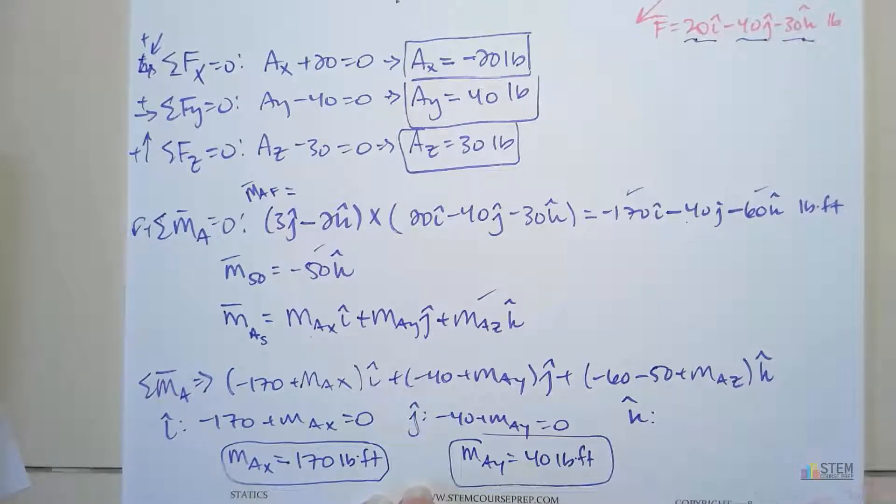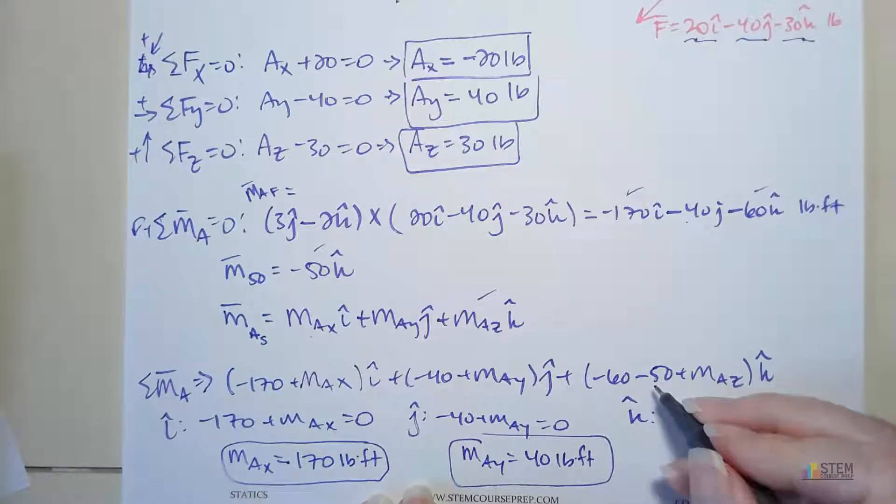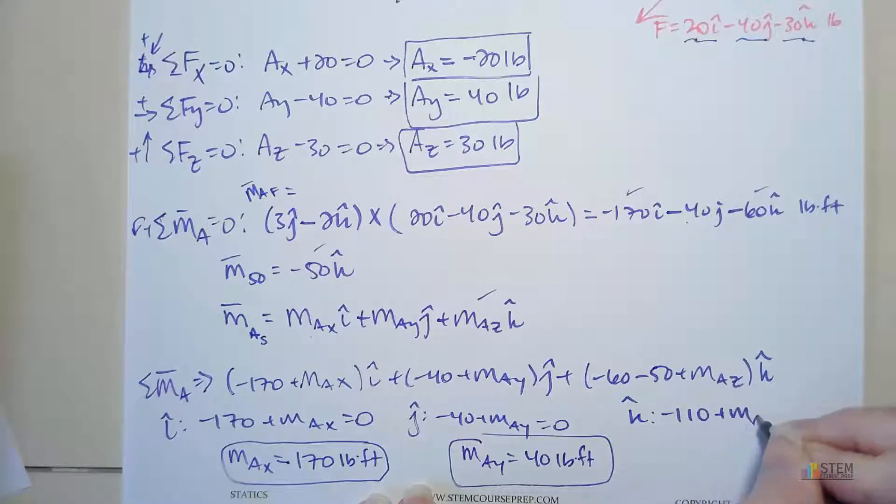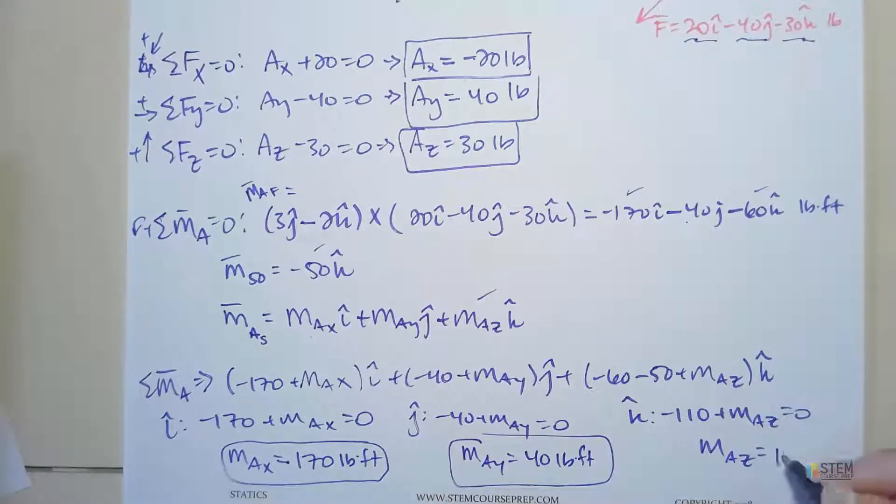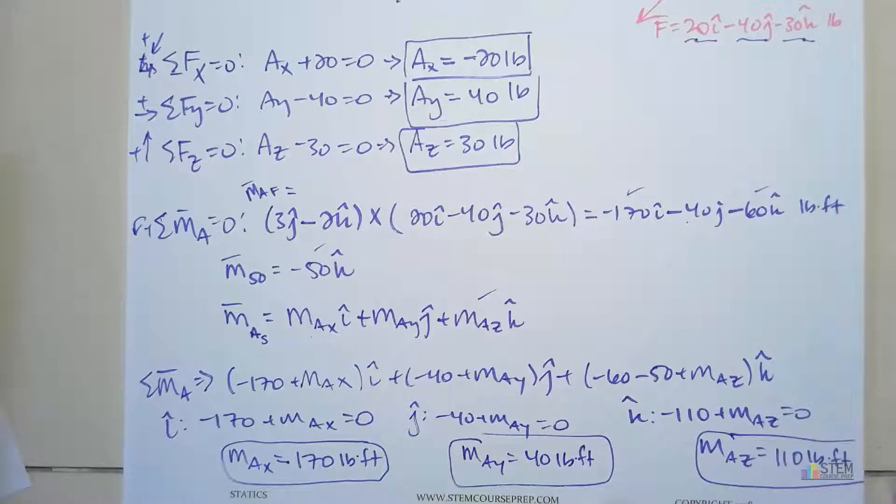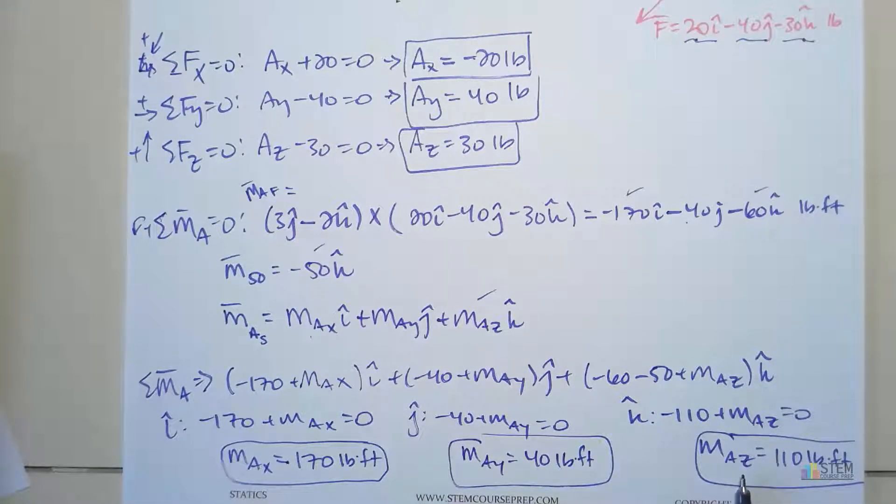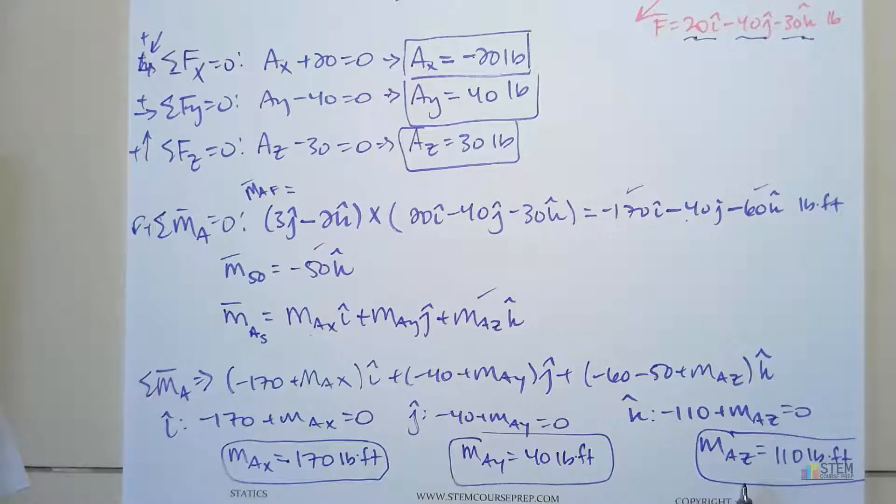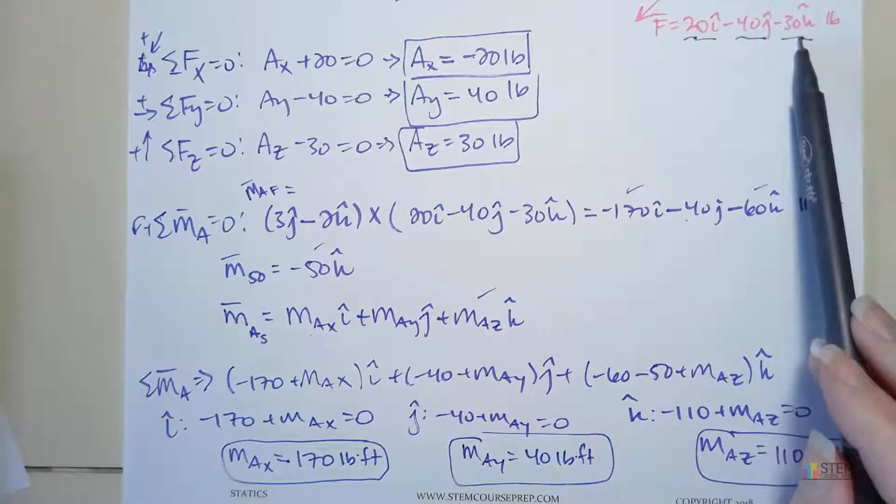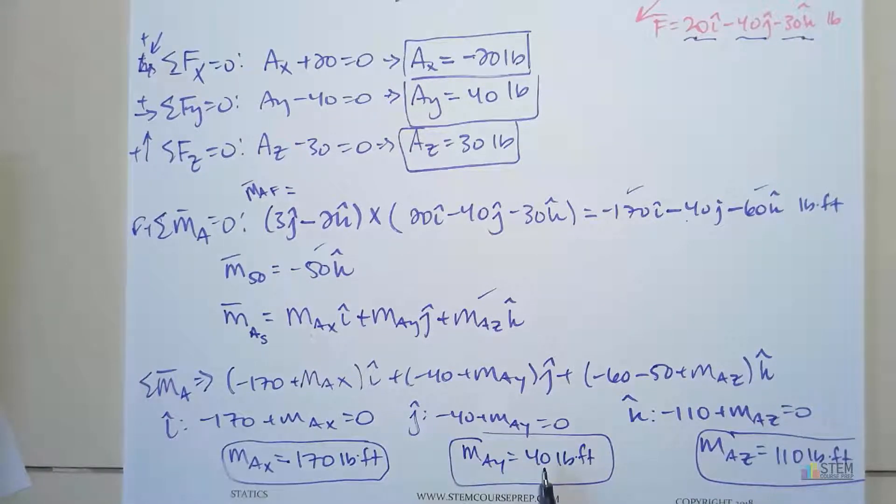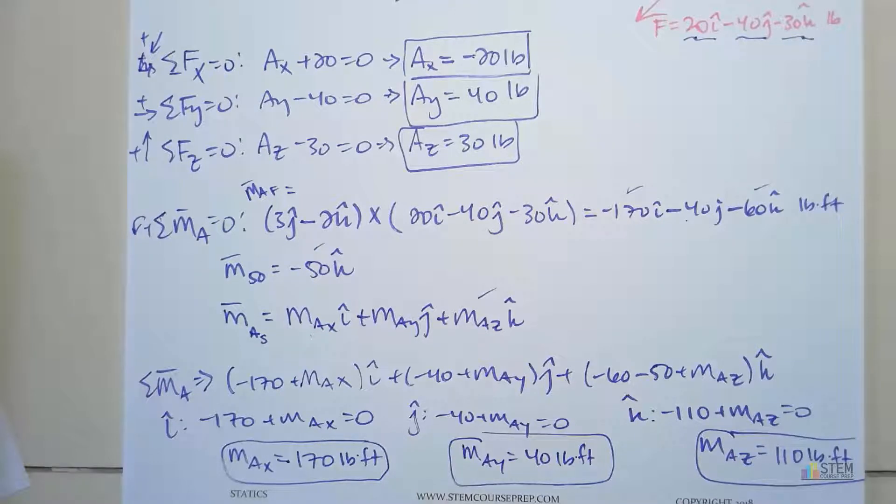And then finally, K. K, you got negative 110 plus M-A-Z equals zero. So the couple moment you get is positive 110 foot-pounds. All right, so now you get that. So this couple moment that's produced by that fixed support, it counteracts that 50 foot-pound couple moment and the moment produced about the Z-axis due to this force here. And these two are both positive also, so counterclockwise moment was the right assumption.